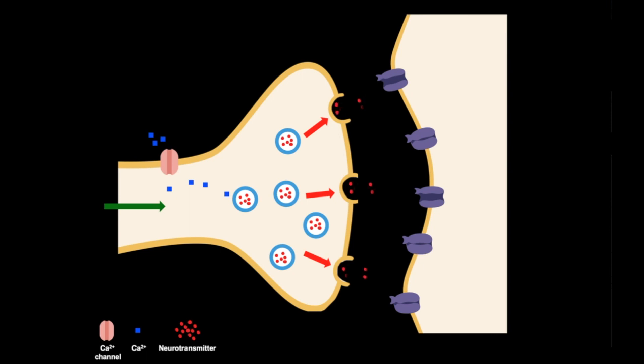And that neurotransmitter now is going to diffuse across the synaptic cleft, bind to neurotransmitter receptors on the postsynaptic membrane. These are ligand-gated channels, and when they open, this triggers a signal in the postsynaptic neuron or other target cell.